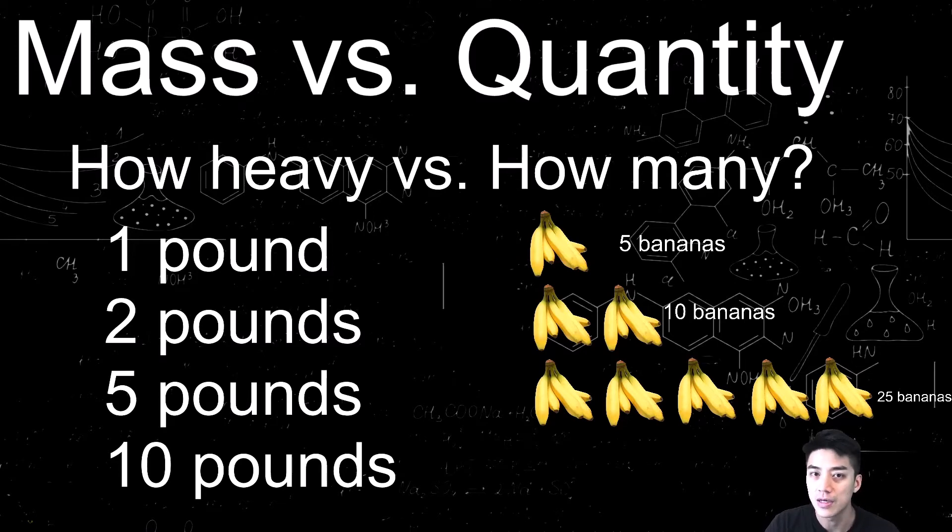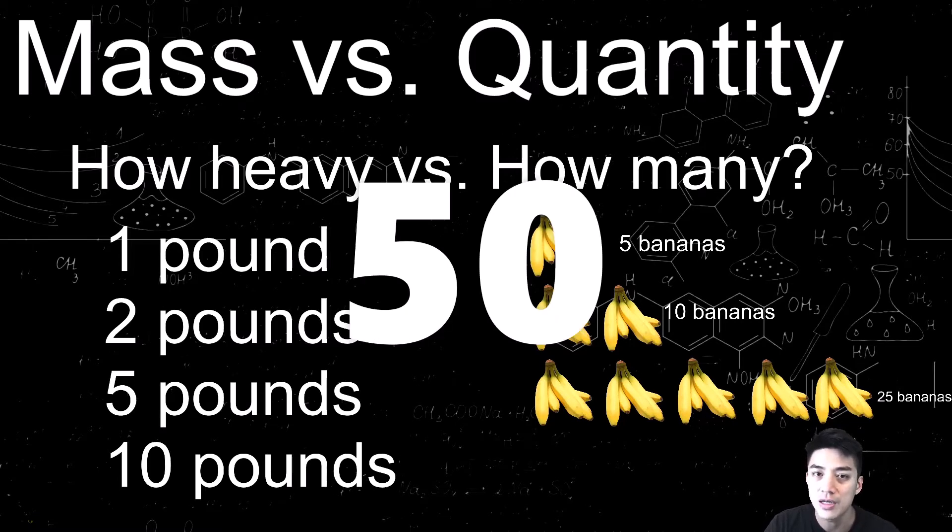If you had two pounds of the same bunch, you would have ten bananas. And if you had a five pound bunch of bananas, then you would have 25 in total. And if you had ten pounds, without even counting how many bananas are in that bunch, you can actually do the math in your head, and you would tell me there are 50 bananas.